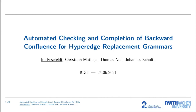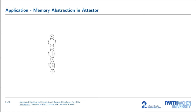Hello everyone. I would like to tell you about the tool we developed at our chair, and it has mainly two features. On the one hand, it can check a variant of confluence — which is backwards confluence — for a subset of transformation systems, the HyperEdge replacement grammars. The next feature is, if the grammar is not backwards confluent, to try to find a similar grammar that is confluent, which we call the completion. Maybe a disclaimer upfront: I'm not an expert at graph transformations. We were mainly application driven, but I think this tool is applicable to other applications as well.